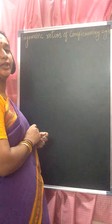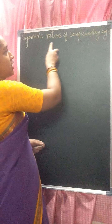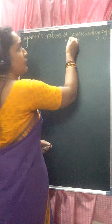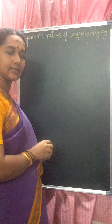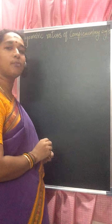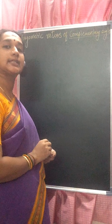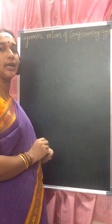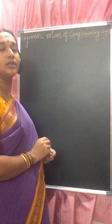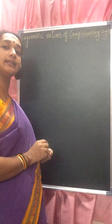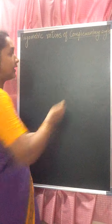In this video, we will see trigonometric ratios of complementary angles. What are complementary angles? When the sum of any two angles is 90 degrees, we will say that as complementary angles.